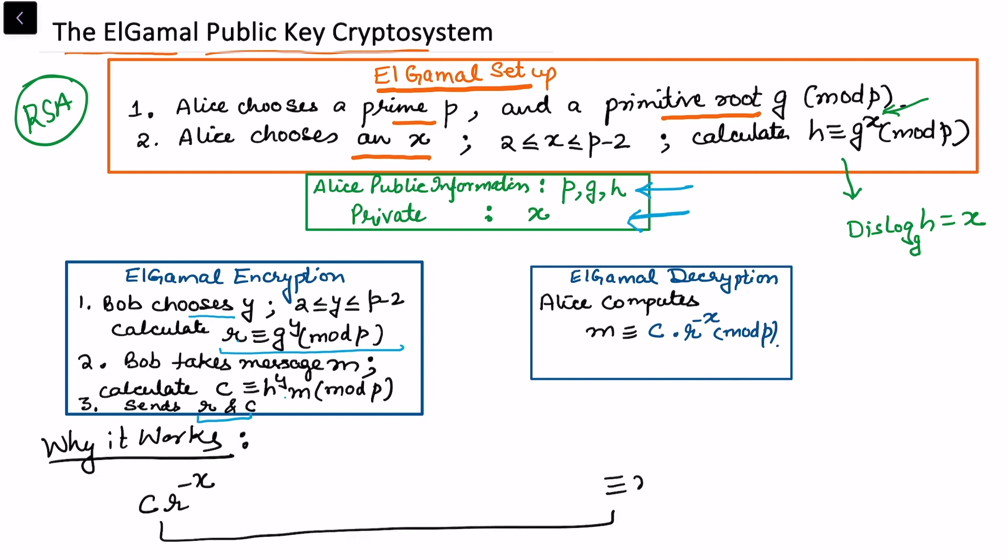Because c is the information which is sent by Bob, r is the information which is sent by Bob, and x is already available with Alice, this information is already available. So we want to see with this information why we get m. So c is h^y times m, this we can see from the encryption process.